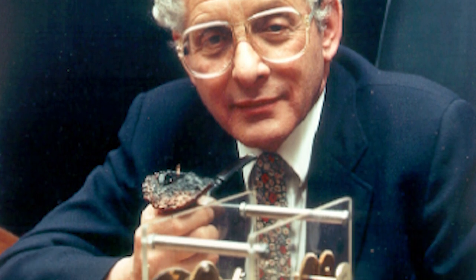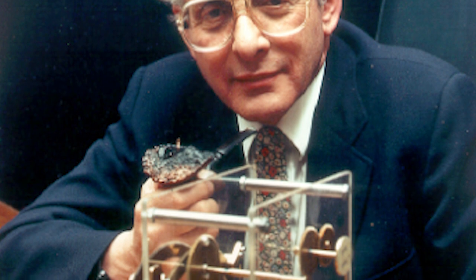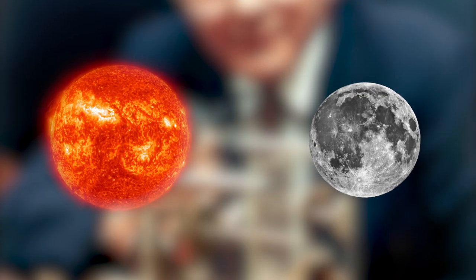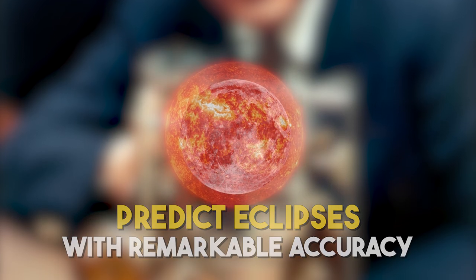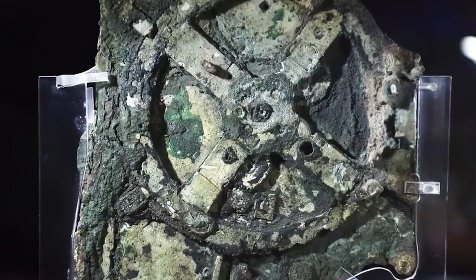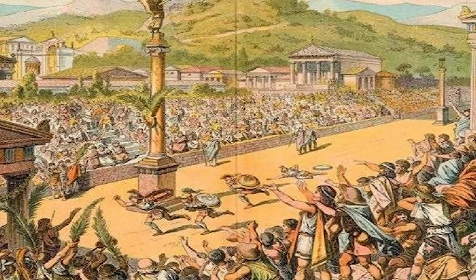This theory was later supported by extensive research, including x-ray imaging and 3D computer modeling, which revealed that the mechanism could calculate the positions of the sun, moon, and even predict eclipses with remarkable accuracy. Additionally, it could determine the dates of the ancient Olympic Games and other significant events.